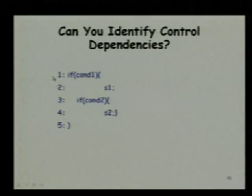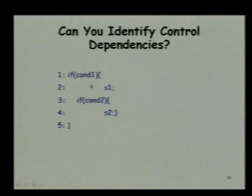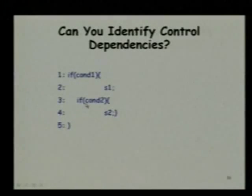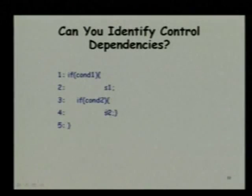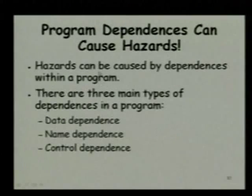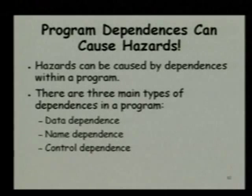To elaborate further, consider the nested code: if condition 1, S1; if condition 2, S2. Can you identify the control dependencies? S1 is dependent on condition 1. What about S2? It is dependent on both condition 3 and condition 1 — there is a dependency from here to here and also from here to here. But to have another view on hazards, we have to think that there are something in the programs which cause the hazards — these are the dependencies present in the program. The hazards can be caused by dependence within a program. Mark the word 'can be caused' because sometimes there might exist dependencies but they may not result in any hazard.